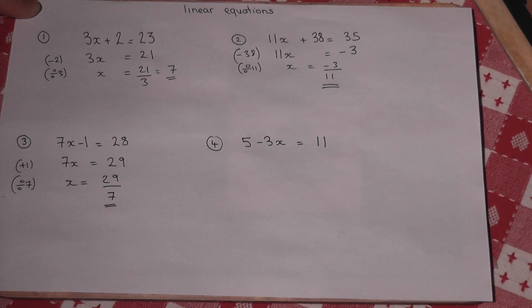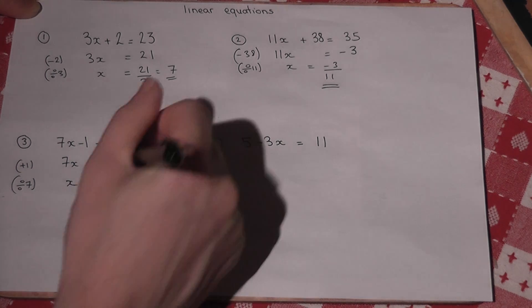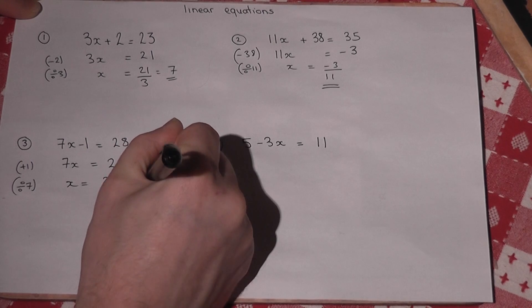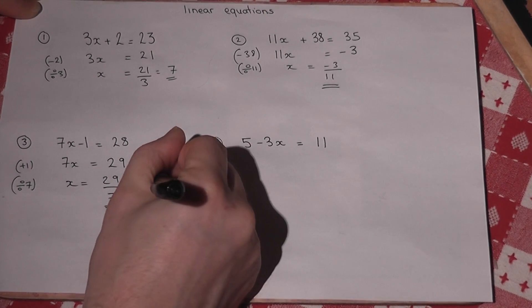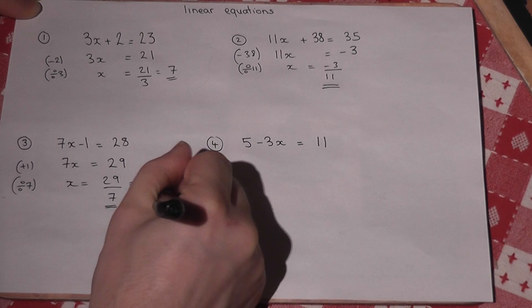Which you could if you wanted write as a mixed number. So remember there are 4 sevens in 29, remainder 1. 4 and 1 seventh.